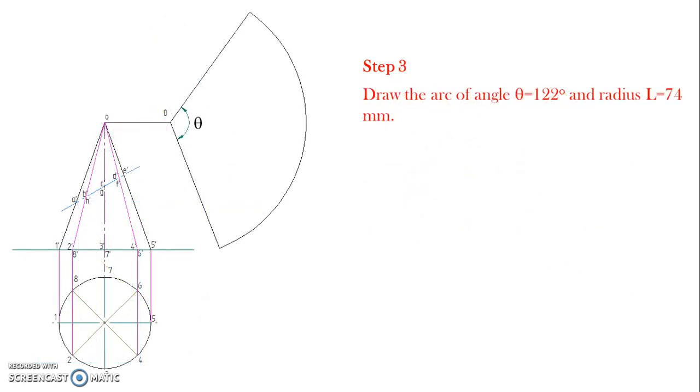Once the angle theta is calculated, draw this line OO parallel to base and draw the arc of angle theta equal to 122 degrees and radius L equal to 74 mm.